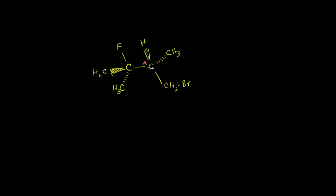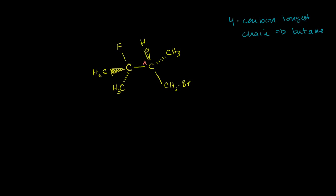We have one chiral center, so the RS naming system will apply. But a good starting point is naming it using standard nomenclature rules. We look for the longest carbon chain. Starting here, we can count one, two, three, four carbons — we could go to either of two endpoints for the fourth carbon. So we have a four-carbon longest chain, which tells us we'll be using the prefix but-, or it will be a butane, since they're all single bonds.